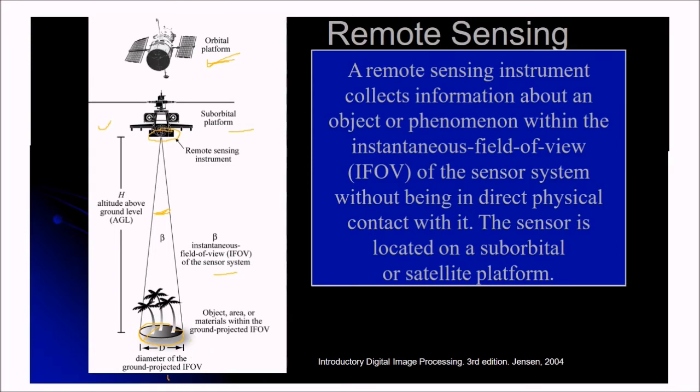This is the object area or materials with the ground projected IFOV we are talking about. D is the diameter of the ground projected IFOV and H is the height, altitude above the ground level of the remote sensing instrument.